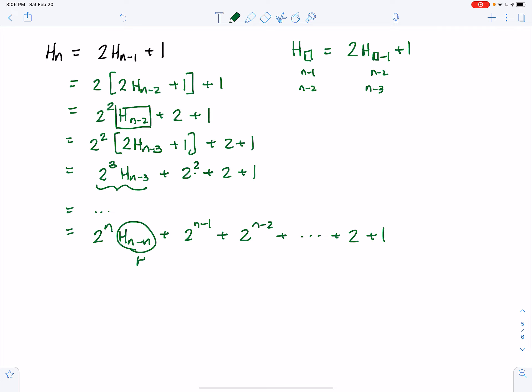Now this is h₀, which we defined as 0 from the Hanoi sequence before. So this equals 2^(n-1) all the way down to 2² plus 2 plus 1.